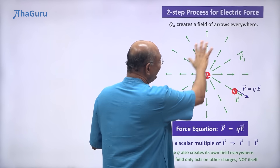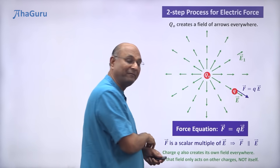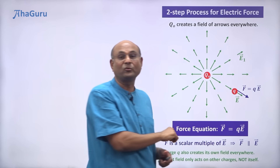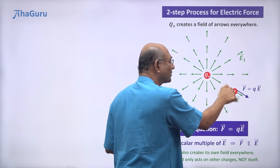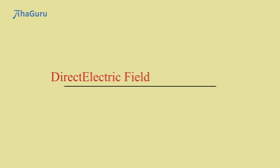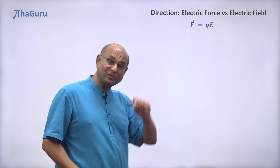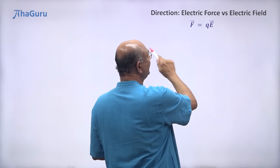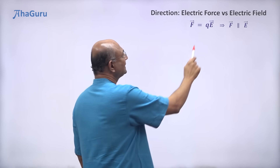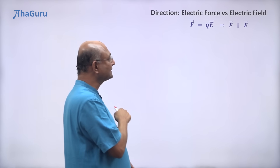So Q naught's field acts on Q. Q naught puts field vectors everywhere, but not everything is acting on Q — only at the location of Q, the electric field that is there acts on Q. And how much? The force F is Q times E vector. We have seen that the force acting on a charge Q in an electric field E is F equals Q times E vector. This tells us that F is parallel to E. But what happens in the case of positive charges and negative charges? Let us understand that a little more.